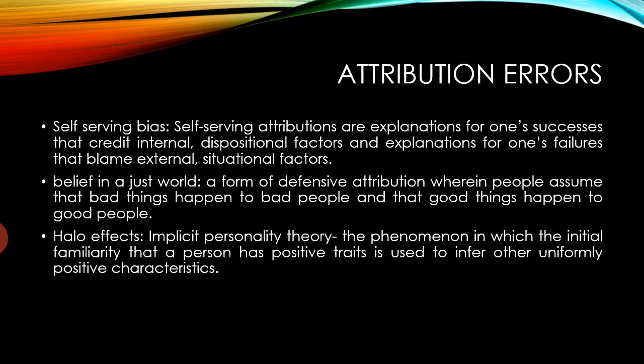Next is Self-Serving Bias — explanations for one's successes that credit internal dispositional factors, and explanations for one's failures that blame external situational factors. For example, if a person gets good marks they say 'I worked hard,' but if they fail they say the exam was tough, the syllabus had out-of-syllabus questions, or the teacher's teaching method was poor. The fourth bias is Belief in a Just World — a form of defensive attribution wherein people assume bad things happen to bad people and good things happen to good people. If something bad happened to others, we say it is because of their bad deeds.